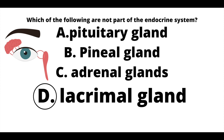Our answer here is going to be D, lacrimal glands. The endocrine system includes glands that secrete hormones directly into the bloodstream. As opposed to the endocrine system, there's the exocrine system — these glands secrete products outside of the body. Pituitary gland, pineal gland, and adrenal gland are all part of the endocrine system and secrete hormones directly into the blood.